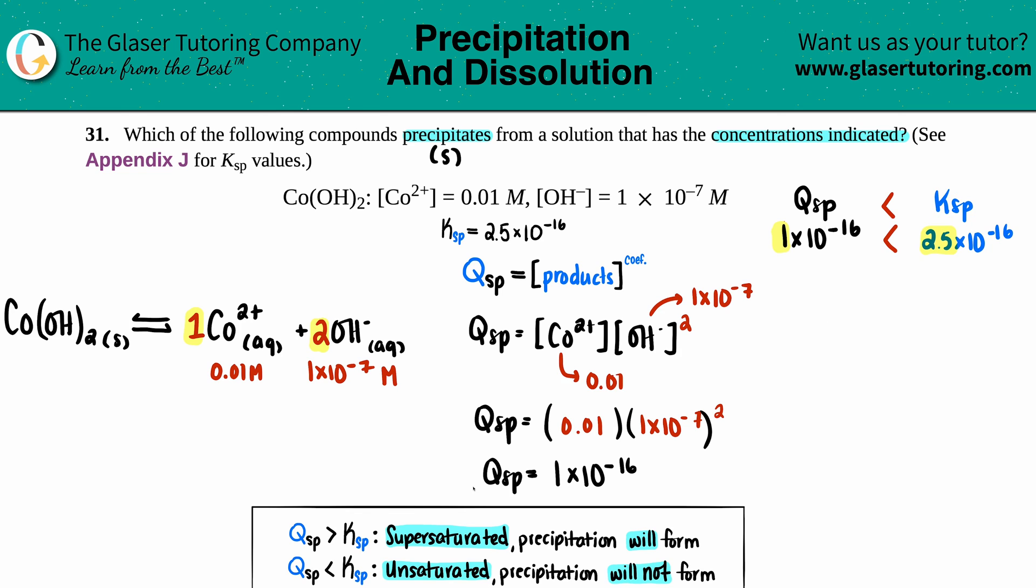We didn't reach our limit. If the Qsp is less than the Ksp, that means you will not form a precipitate. Precipitation will not occur.